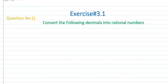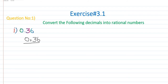Now we solve the first part, which is 0.36. To convert this decimal number into a rational number, the first step is to remove the point. We place a fraction with 1 just below the point position, writing 36 on top over 1 followed by zeros.